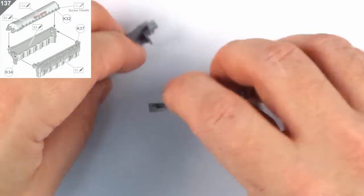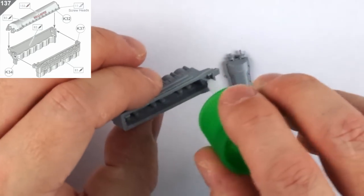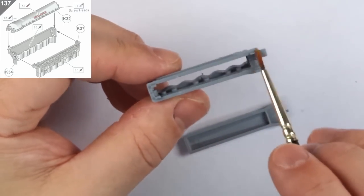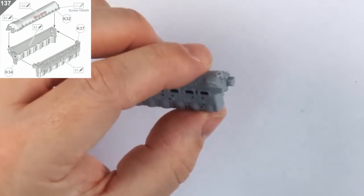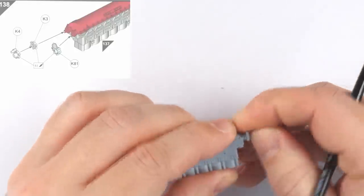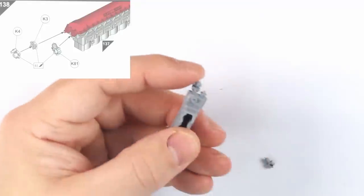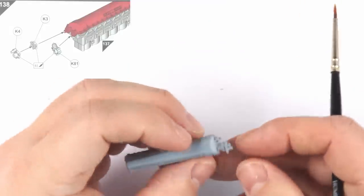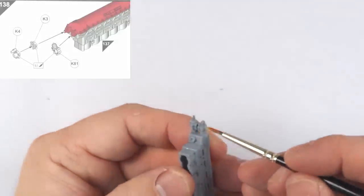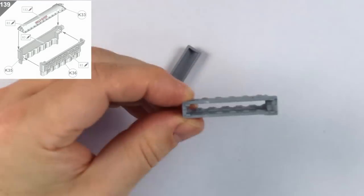Next up in 137 we have another 3 part assembly with the starboard bank of 6 cylinder head blocks, which easily goes together with some Tamiya extra thin as usual. Step 138 adds the two piece auxiliary pump on the left, followed by the air compressor as part K81. As we've seen on the other areas of the kit before, these can be a bit fiddly due to their size, but nothing untoward. Step 139 then repeats 137 for the port bank, which doesn't require the additional add-ons.